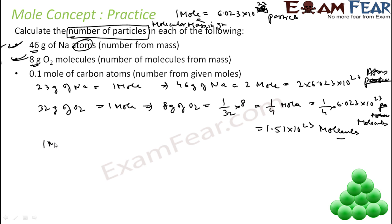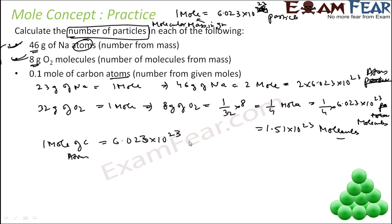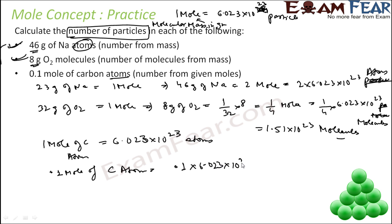Third: 0.1 mole of carbon atoms. We know that 1 mole of anything is 6.023 into 10 to the power 23 particles. So 0.1 mole of C atoms will be 0.1 into 6.023 into 10 to the power 23, which equals 6.023 into 10 to the power 22 atoms.